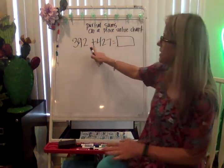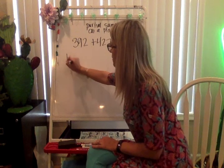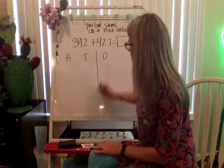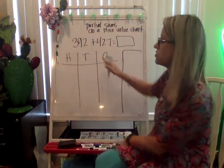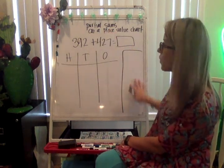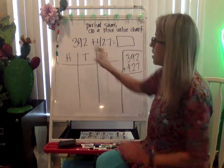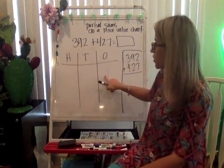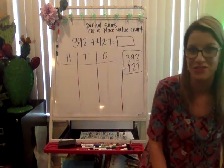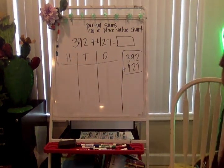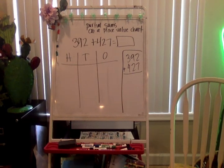All right, so we've got 392 plus 427 equals to be something. I'm going to put it on my place value chart, my hundreds, my tens, and my ones. And I'm also saving a space because to the side, I want to use the partial sums equation. I'm going to go ahead and do this ahead of time. Please fill in 392 plus 427 on your place value chart. Push play when you're done with that. And then you can finish the rest of the equation with me.